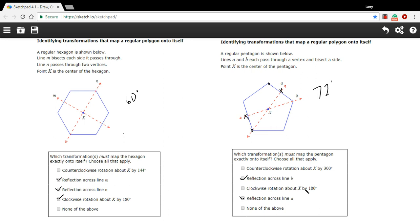So that is a little bit of practice with transformations that map regular polygons onto themselves.